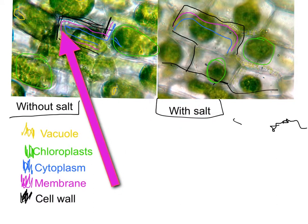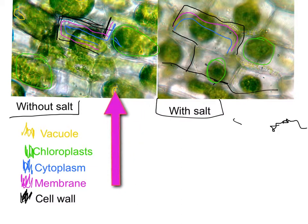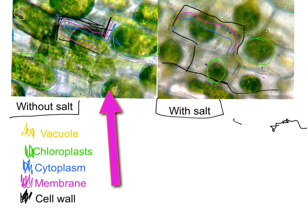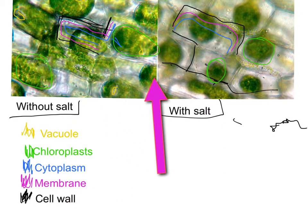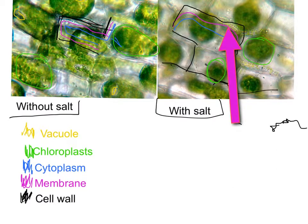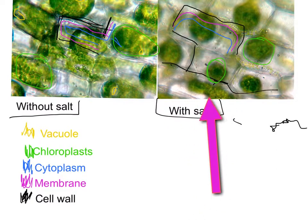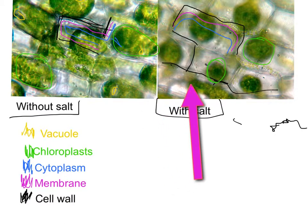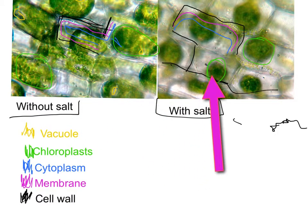The cytoplasm is visible here in both images, and Master Jeremy will show us the membrane — which is present in both the without-salt and with-salt pictures. The cell wall is also present in both, as you can see here and here.